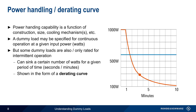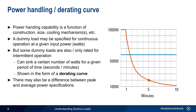In a similar way, dummy loads may also have different specifications for peak and average power. This can be important when dissipating signals with a high peak-to-average power ratio, or crest factor, which is common in many modern digitally modulated signals.